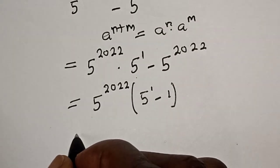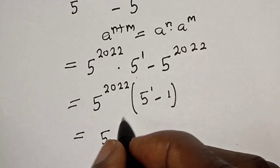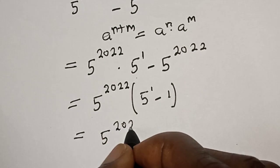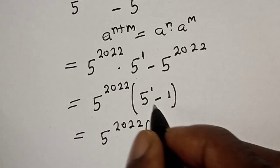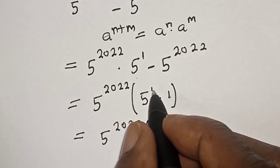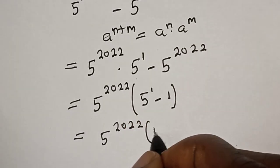And this equals 5 raised to power 2022 times the quantity 5 minus 1, which is 4.